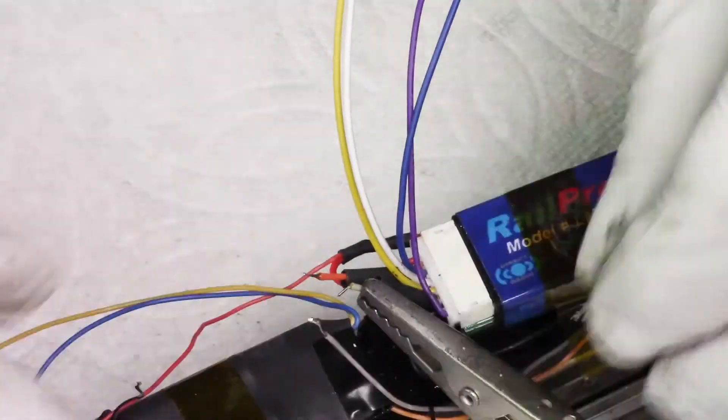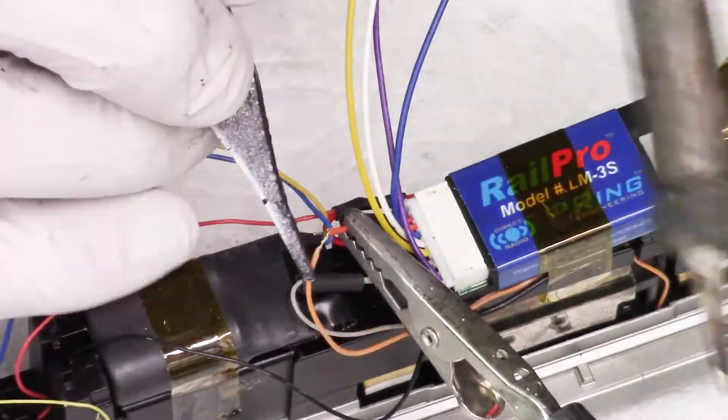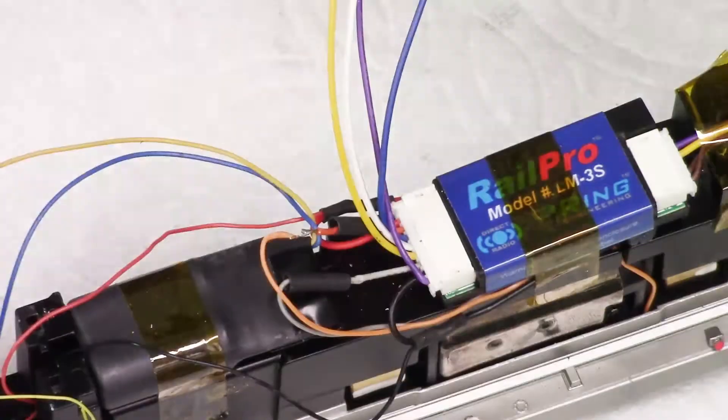You can see that I tin the wires first, I cut everything to length, I install the heat shrink tubing and then I can join the wires and then get the heat shrink tubing into place and shrunken down.